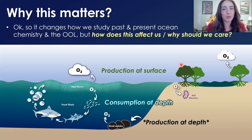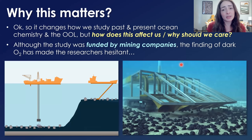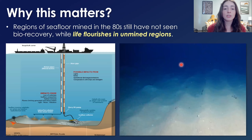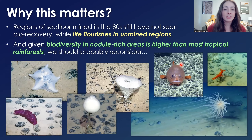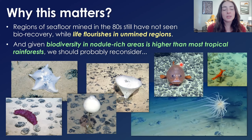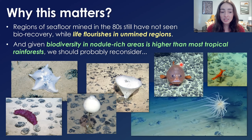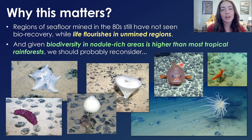How does this affect us directly? Although the study was ironically funded by mining companies, the finding of dark oxygen has made the researchers hesitant about mining these nodule-rich regions. Regions of the seafloor mined in the 1980s still have not seen full biotic recovery — not even full bacterial recovery — whereas unmined regions are flourishing. The biodiversity in nodule-rich areas of the seafloor is higher than even most tropical rainforests, so we should probably hold off on mining these regions, especially considering oxygen is being produced there, potentially supporting more life than we previously thought. But people will probably end up doing it anyway.